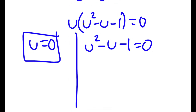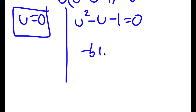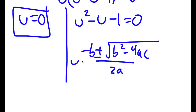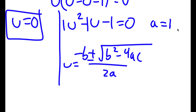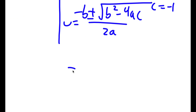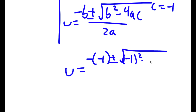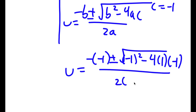We already have one solution of u. To solve the quadratic, I'm going to use the quadratic formula: negative b plus or minus the square root of b squared minus 4ac, all over 2a. In this case, a is 1, b is negative 1, and c is negative 1. So I have u is equal to negative of negative 1 plus or minus the square root of negative 1 squared minus 4 times 1 times negative 1, all over 2 times 1.